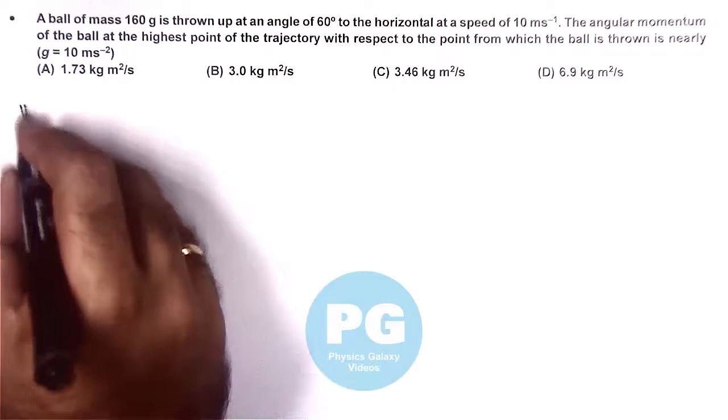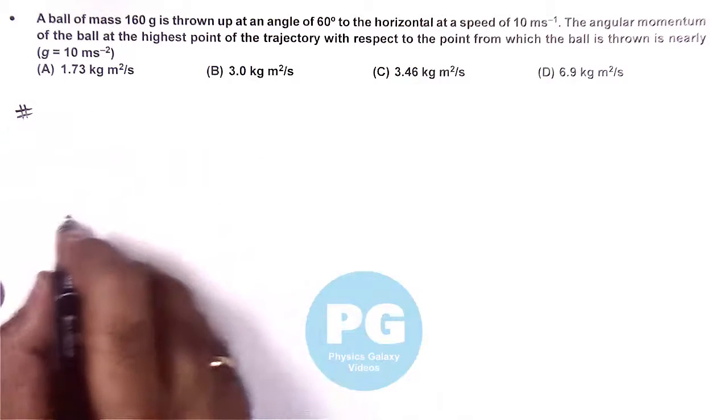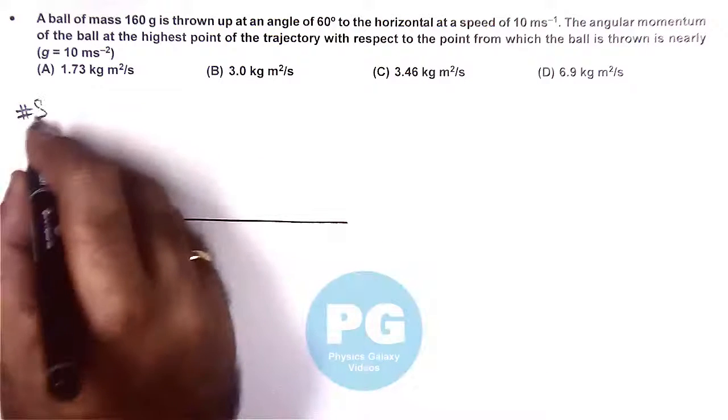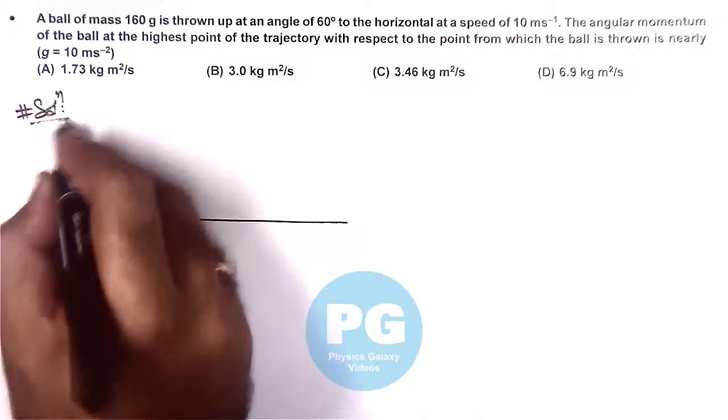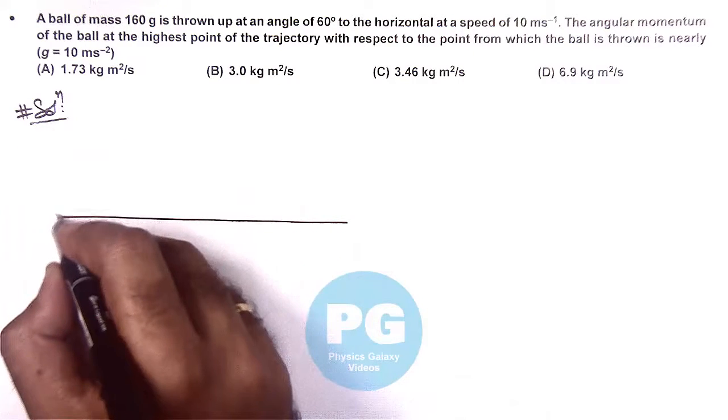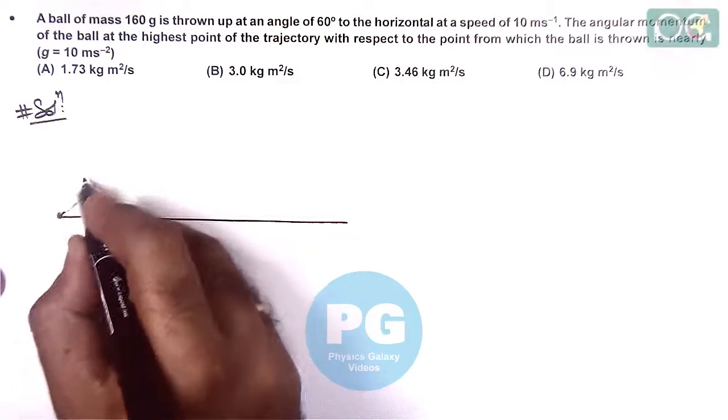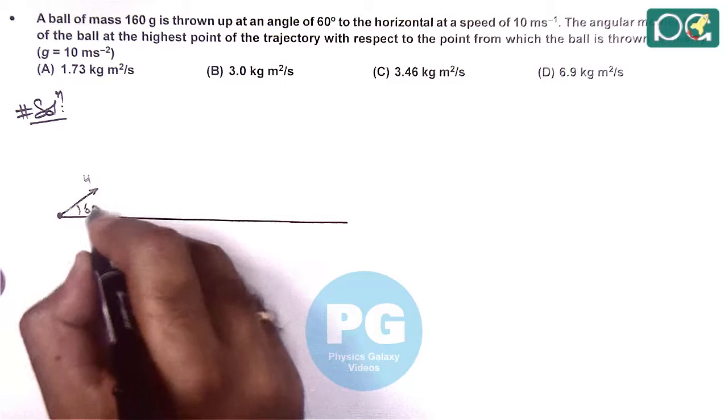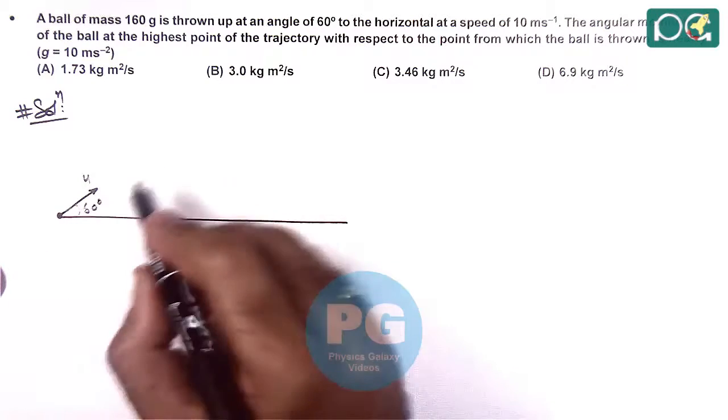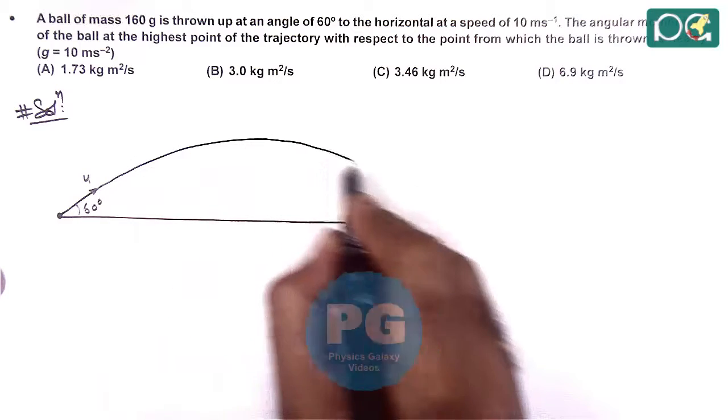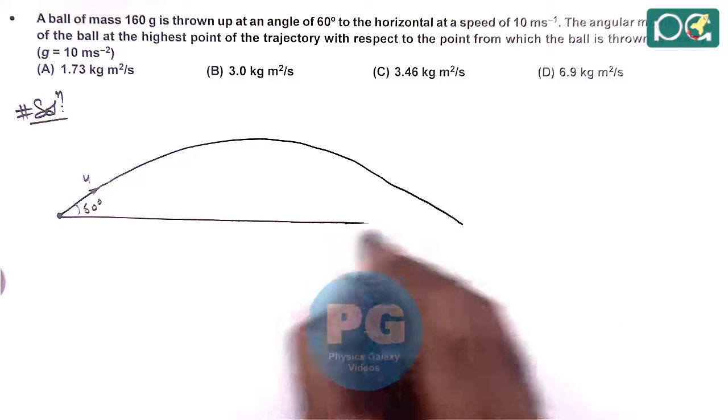Here if we visualize the case it is the case of a projectile motion. In the solution we can see a ball is projected with the speed u at an angle 60 degree with the horizontal. It goes up and then finally falls on ground like this.